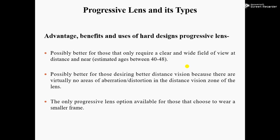Number two: possibly better for those desiring better distance vision, because there are virtually no areas of aberration or distortion in the distance vision zone of the lens. Number three: the only progressive lens option available for those who choose to wear a smaller frame, making this design better suited for patients interested in small frames.